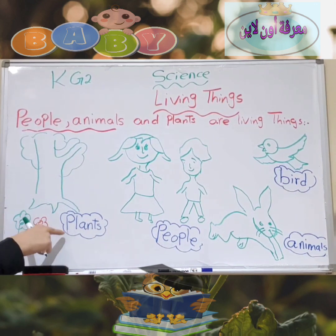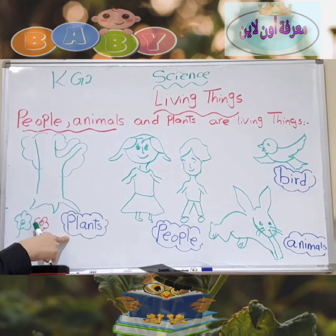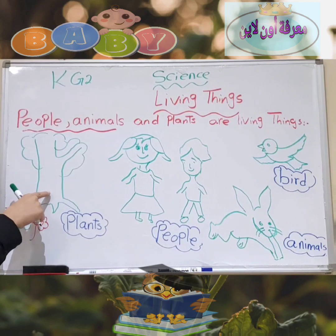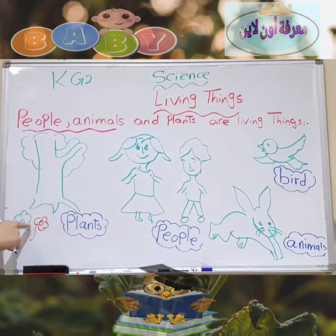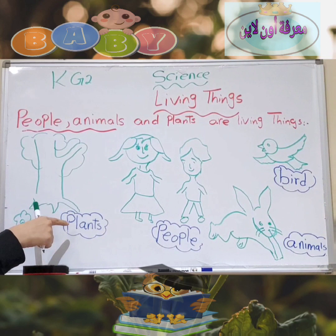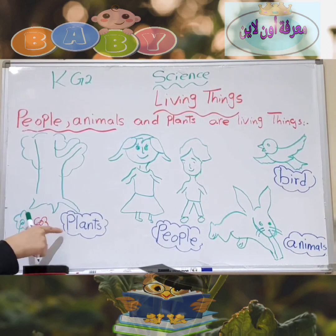Let's see what are plants. Plants like trees and flowers. Trees and flowers are plants. All are living things.